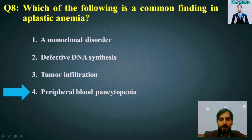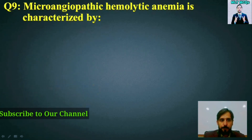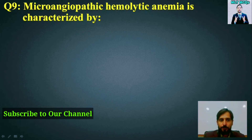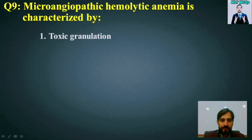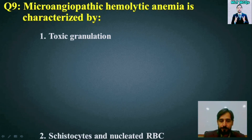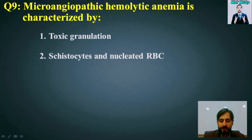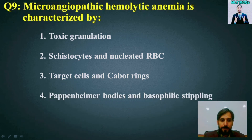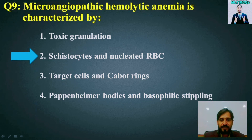MCQ number 9: Microangiopathic hemolytic anemia is characterized by which of the following? Options are: toxic granulation, schistocytes and nucleated RBCs, target cells and Cabot rings, or Pappenheimer bodies and basophilic stippling. The right answer is option number 2 — schistocytes and nucleated RBCs.